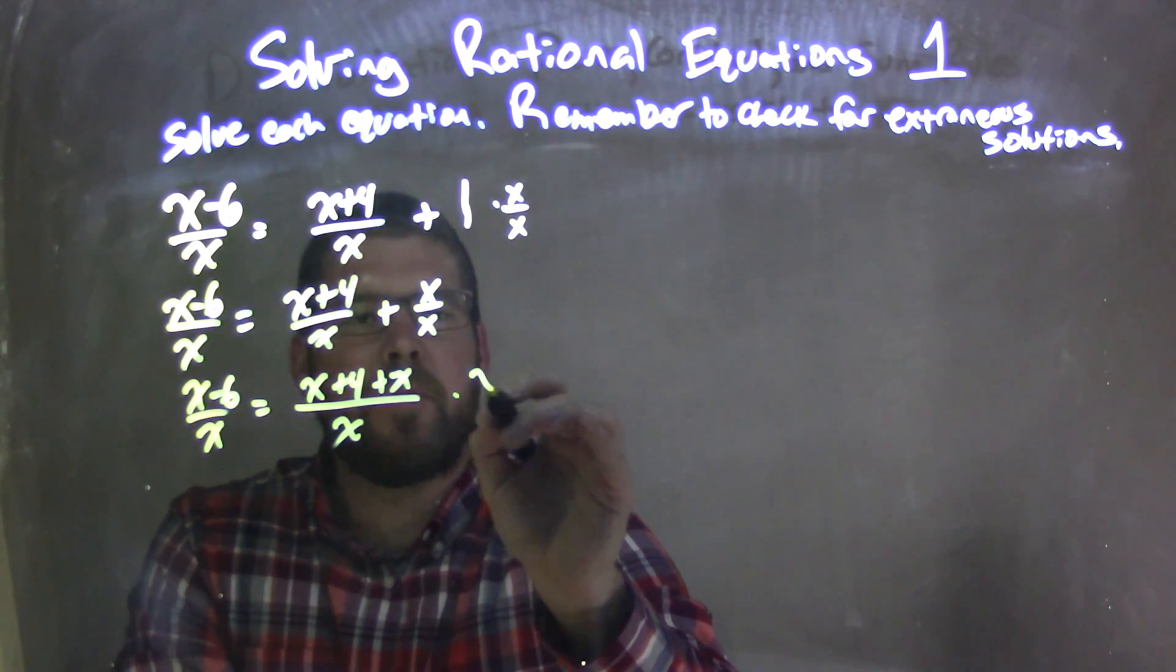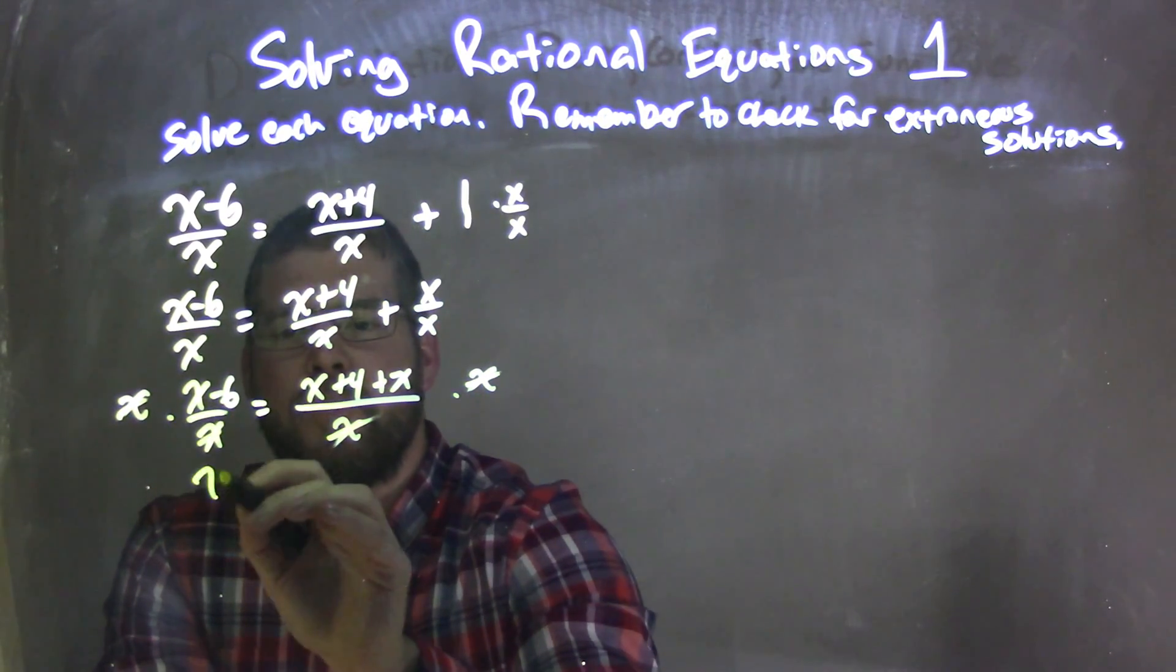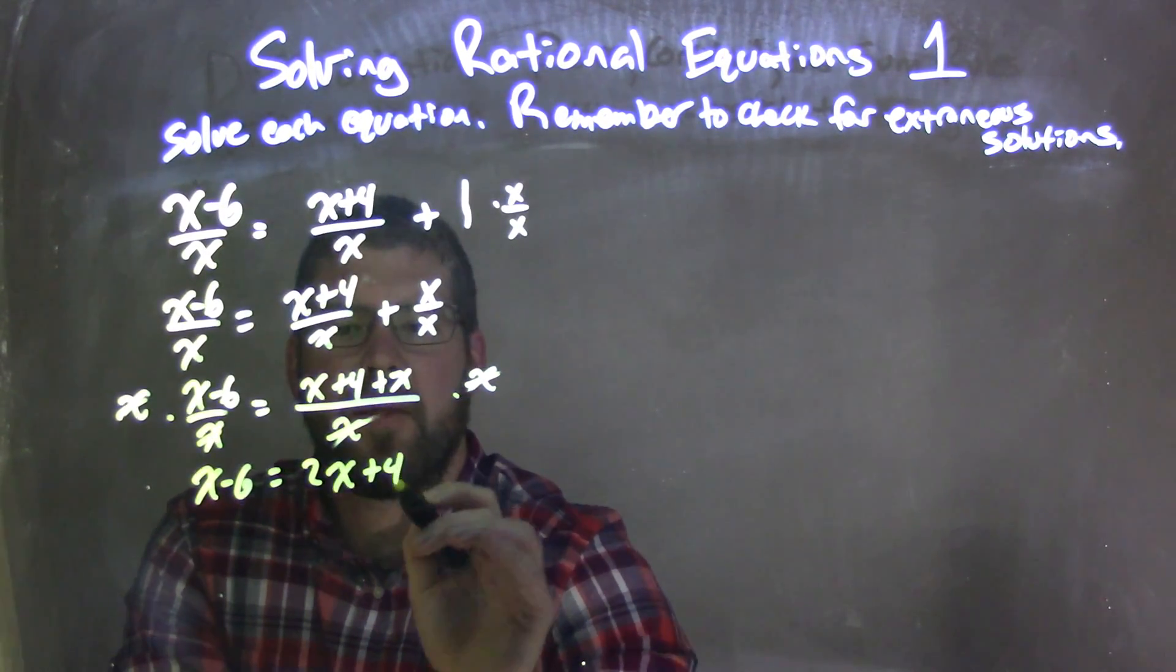Now I can multiply both sides by x. Eliminating the x on the right side and the left side, giving me x minus 6 on the left equals x plus x is 2x, 2x plus 4 on the right.